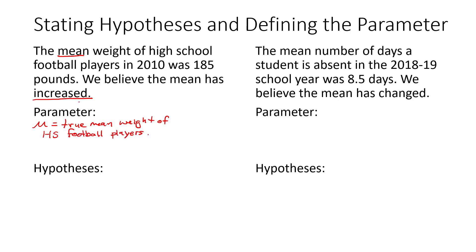Next we state both of our hypotheses. We're going to have a null hypothesis and an alternative hypothesis — H₀ and Hₐ — just like before. For the null hypothesis it's always going to be that the mean is equal to some value. In this case we were told that in 2010 it was 185, so H₀: μ = 185. We want to know has it increased, so increased means greater than: Hₐ: μ > 185.